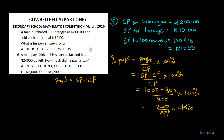Cancelling the zeros, we are left with 200 divided by 8. Dividing: 2 goes into 8 four times, so 200 divided by 8 equals 25. Therefore the percentage profit is 25%. That is the answer.